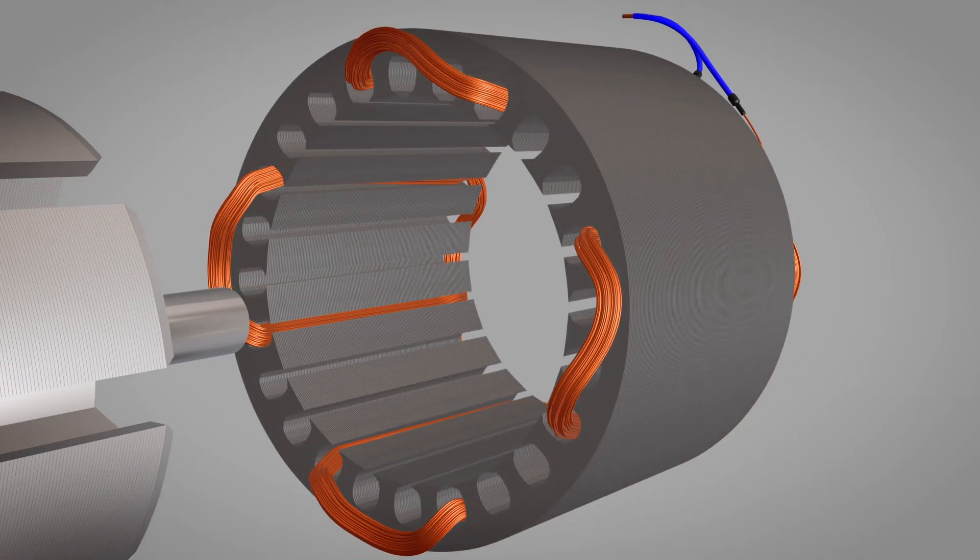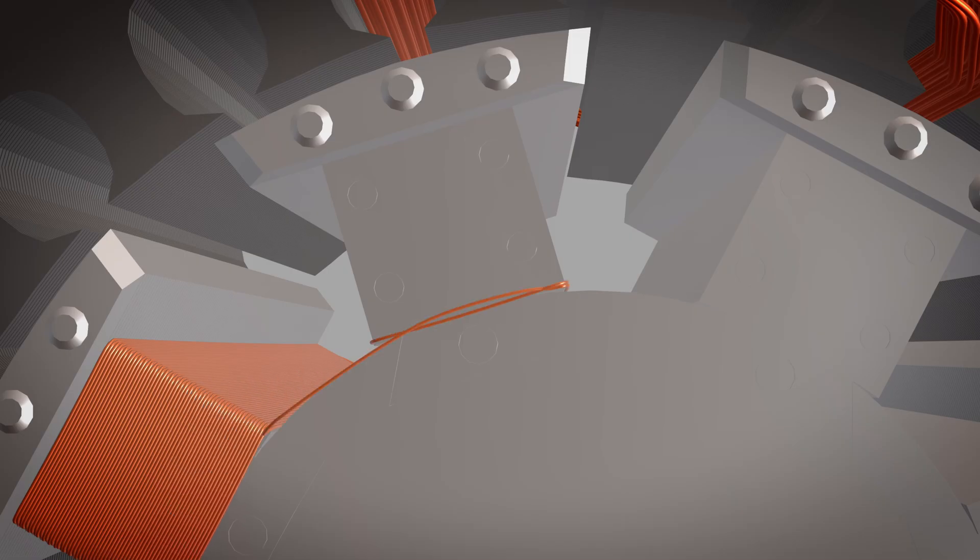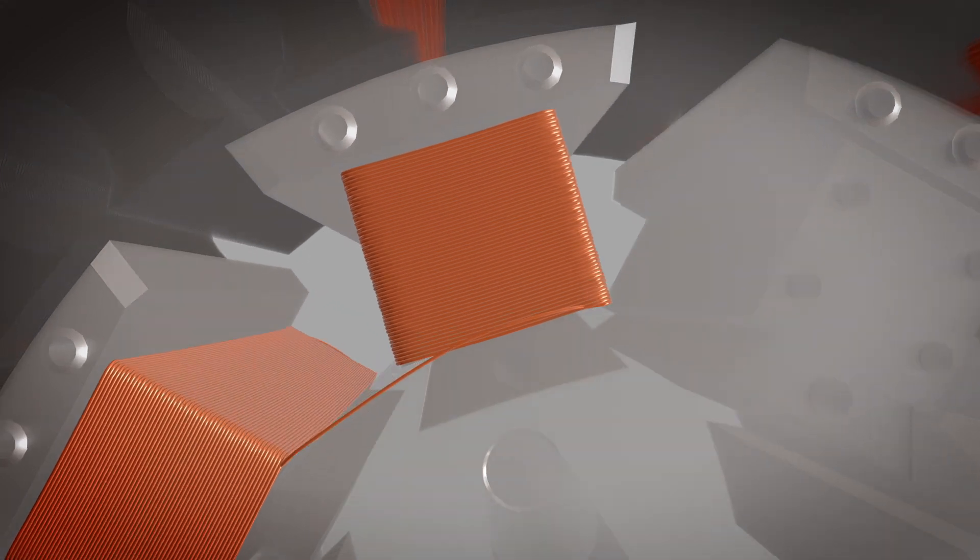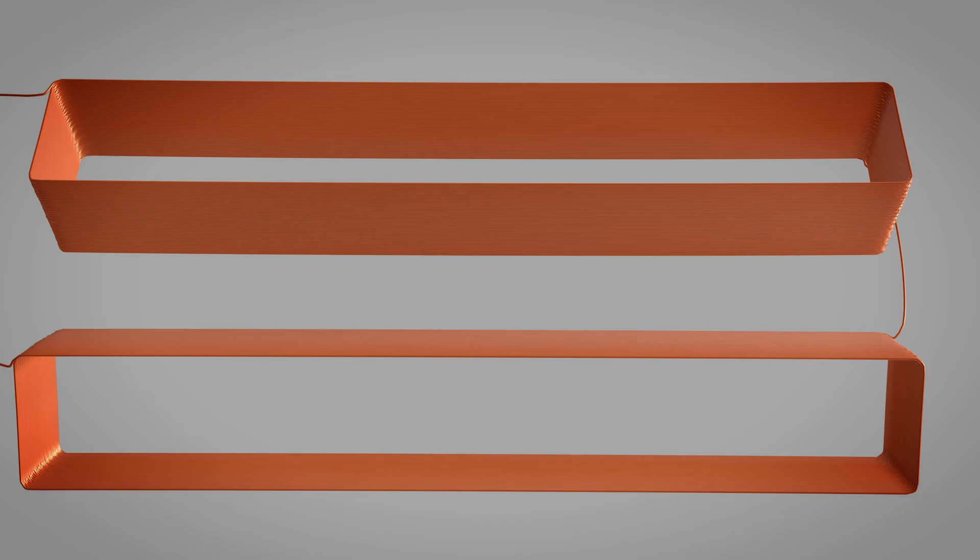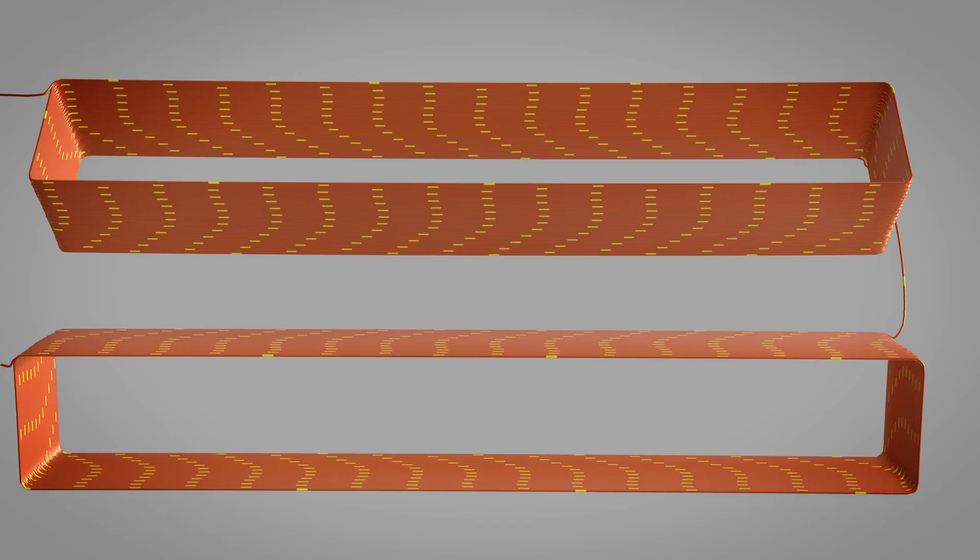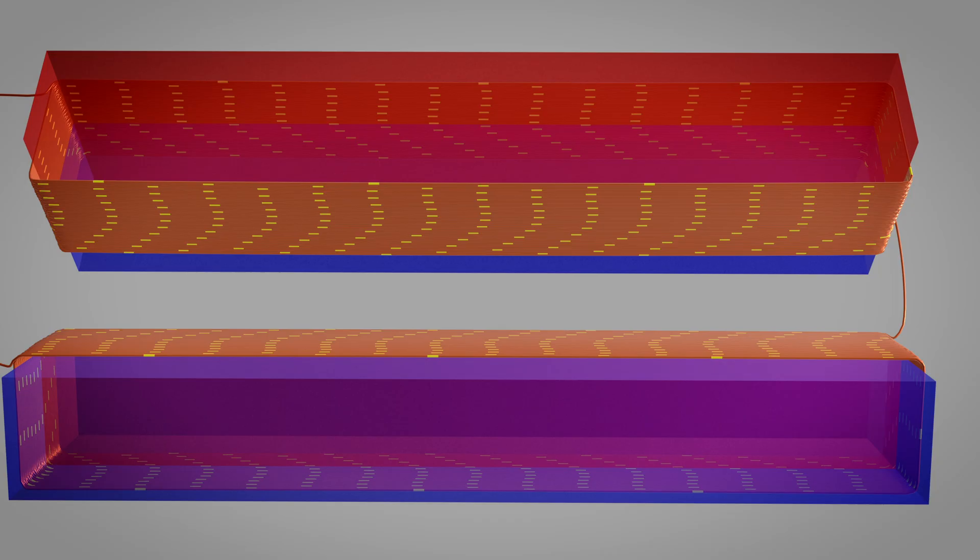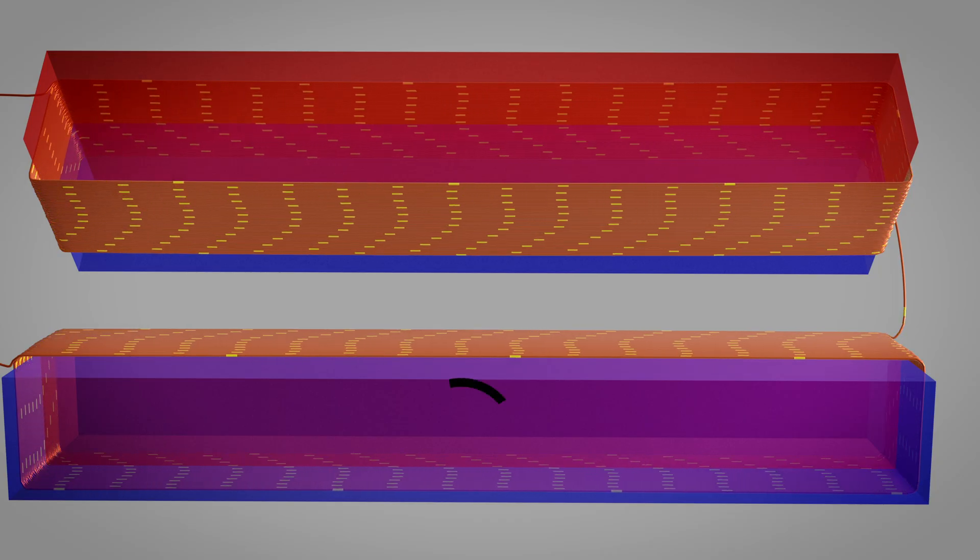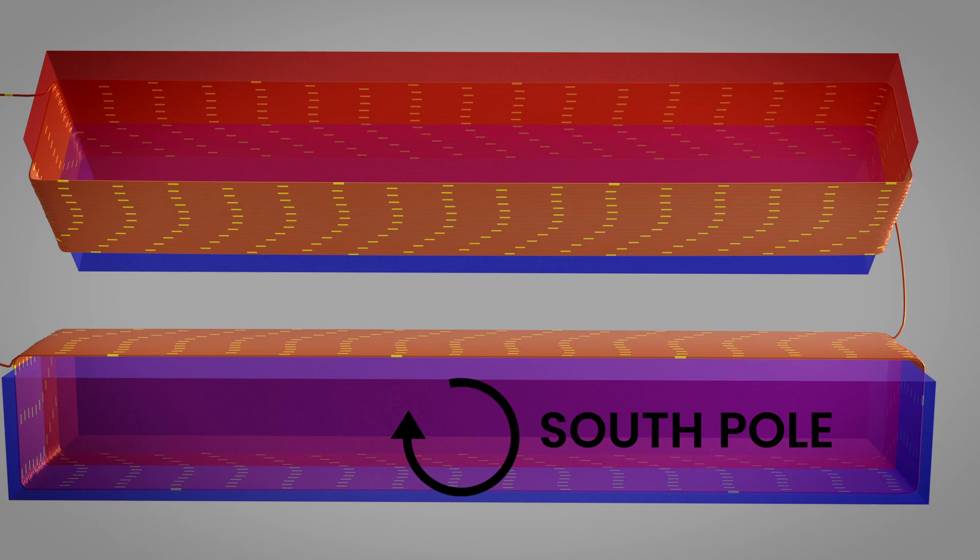Now let's introduce the rotor. We'll start with two adjacent salient poles, projecting electromagnets that form the foundation of our magnetic field generation. Each pole has a concentrated field winding wrapped around it connected in series. When we send DC current through these windings, they become powerful electromagnets. Here's where the clock rule becomes crucial. If current flows clockwise around the first pole when viewed from the end, it creates a south pole.